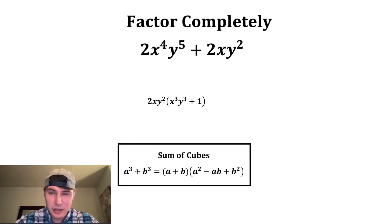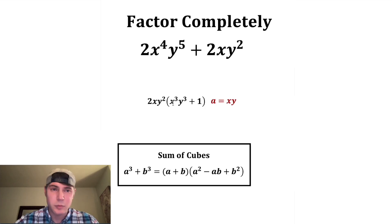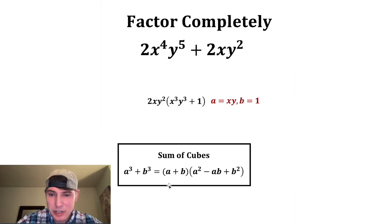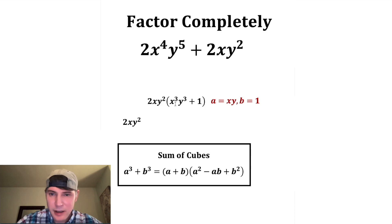This first term is A cubed. That would mean that A is equal to the cube root of this, which would just be XY. And then for B, we want to take the cube root of this one, because one equals B cubed, and that gives us one. So now we can just plug it right into this equation. Let's copy down the GCF: two X Y squared.